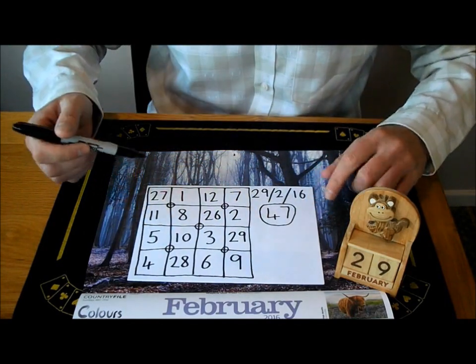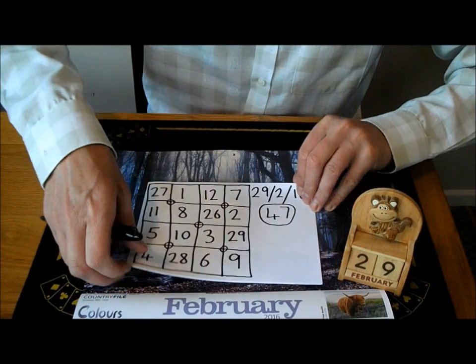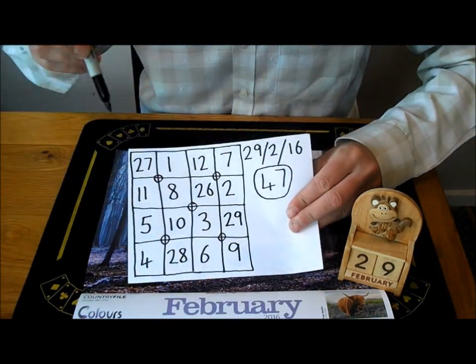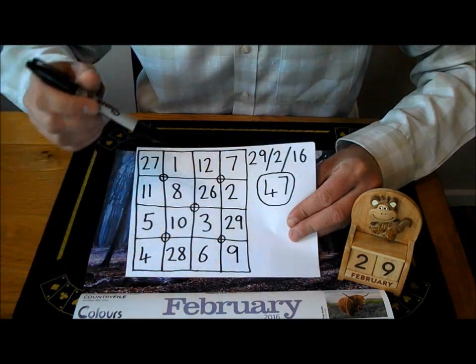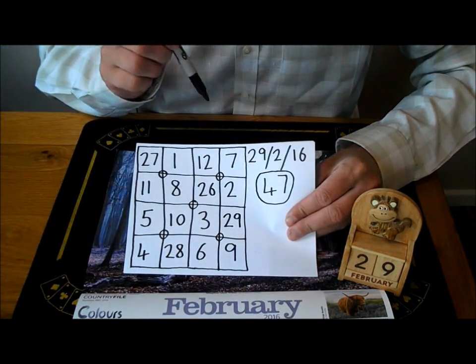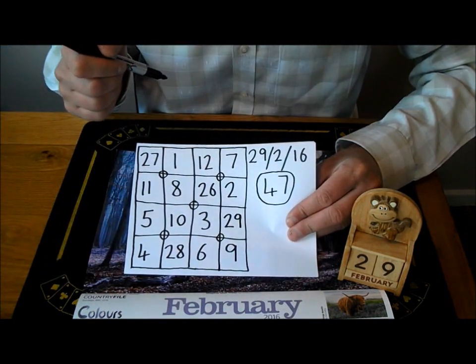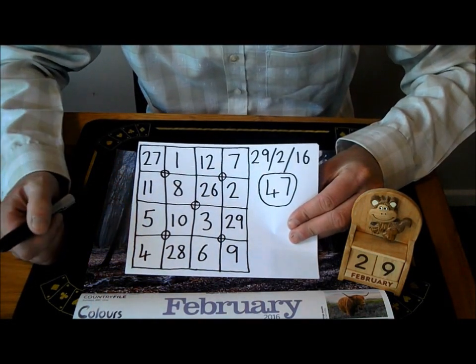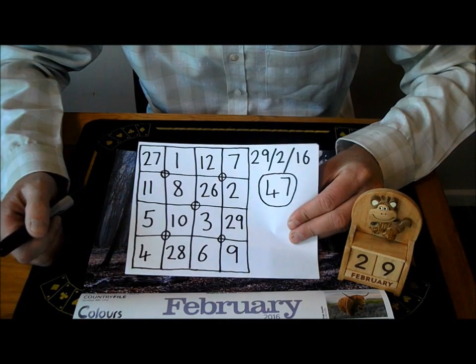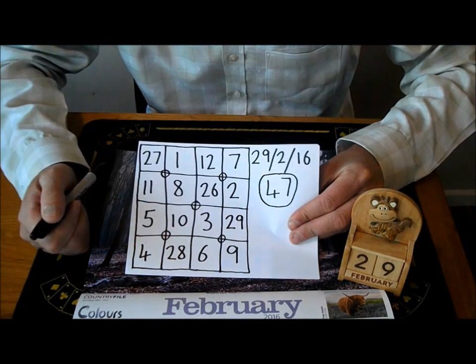And finally, if we add up the four corners, 27 plus 4 is 31, plus 9 is 40, and plus 7 is 47. And that's today's magical number. You might want to pause this and just double check. But I promise you, whichever way you go, it all comes to 47. And that's today's magical number.